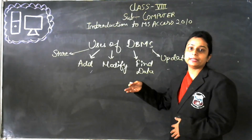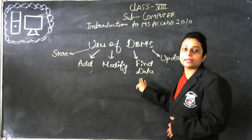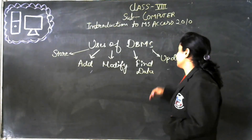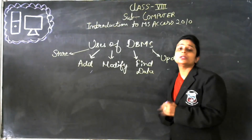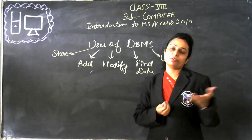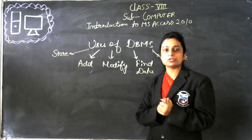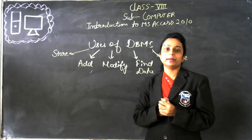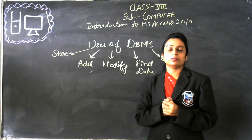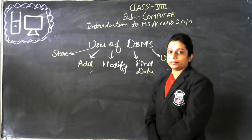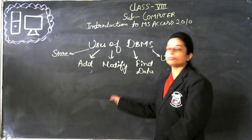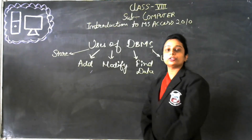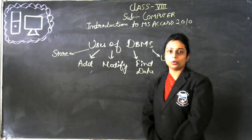The next advantage is data security. If we are maintaining the database management system, we can secure it with a password. We can secure our data with constraints — constraints are nothing but conditions. We can put so many conditions. So if we are maintaining the database management system, our data will be secure.